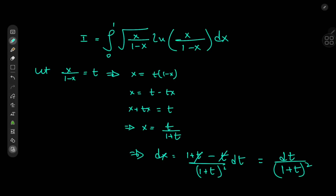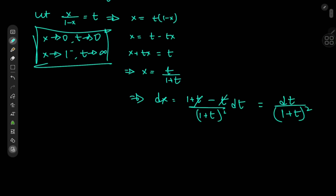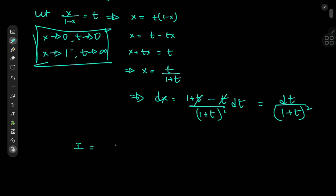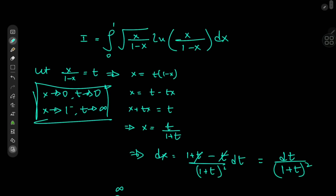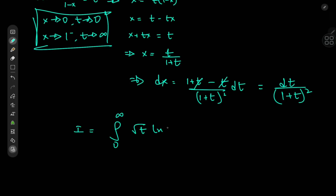As for the limits of integration: as x approaches 0, t also approaches 0, and as x approaches 1 from the left, t approaches positive infinity. So we've transformed the integral into a new one from 0 to infinity of root t times the logarithm of t, divided by 1 plus t squared, dt.